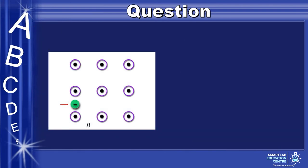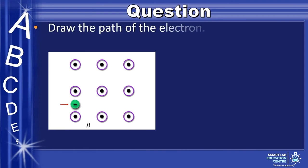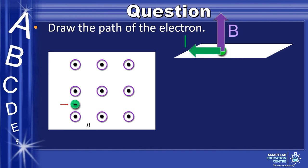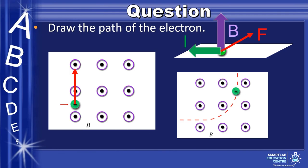Lastly, we have an electron passing by a magnetic field pointing out of the paper. Draw the path of the electron. We can draw the magnetic field and conventional current as shown. Be aware that the current is drawn in the opposite direction to the flow of negative charges. By Fleming's left-hand rule, we get the force pointing in the direction shown. Hence, by taking note of the velocity of the particle and the force exerted, we get a path drawn as shown.